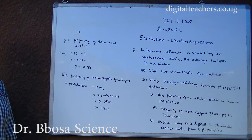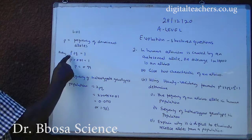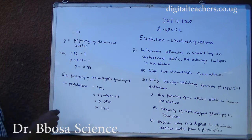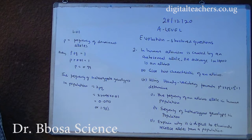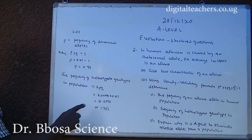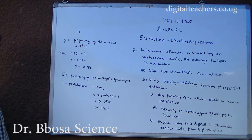p is the frequency of dominant allele. Then, p plus q equals 1. From part one, q equals 0.01. Therefore, p equals 0.99. The frequency of heterozygous genotype in the population equals 2pq, equals 2 times 0.99 times 0.01, which equals 0.0198, or 1.98 percent.